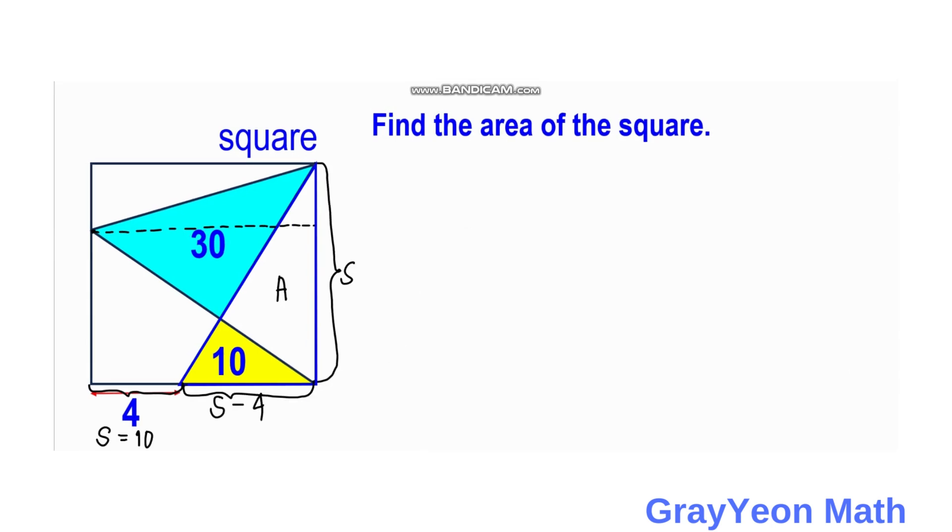Now that we know the side of the square is 10 units, we can find the area of the square. Area = S² = 10² = 100 square units. That is our answer.